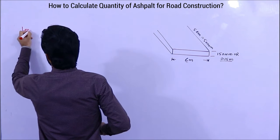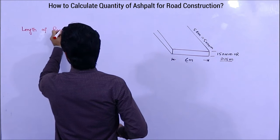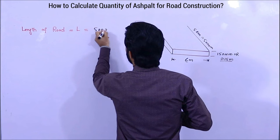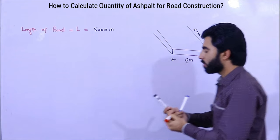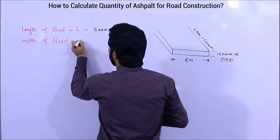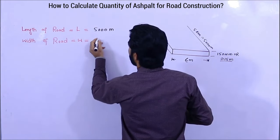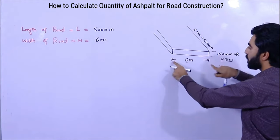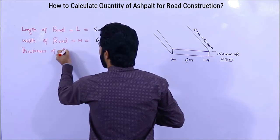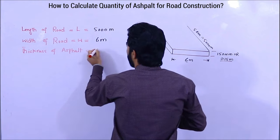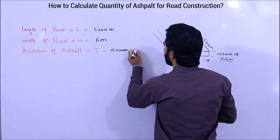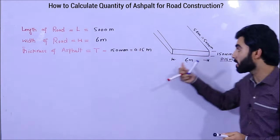Length of road is 5000 meters. The next one is width of road — W for width — which is 6 meters. Length is 5000 meters, width is 6 meters. And thickness of asphalt — T for thickness — which is 150 mm or 0.15 meter. So first of all I need to find the volume of asphalt required for this road.